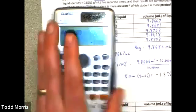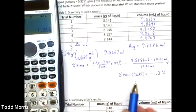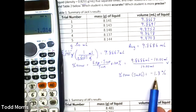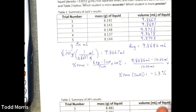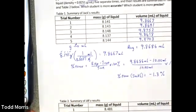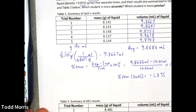So, we then can conclude that, on average, Jack was delivering about 1.3 percent less volume than he thought he was. And that percent error is going to allow us to determine how accurate Jack was and to compare his accuracy to Jill's.